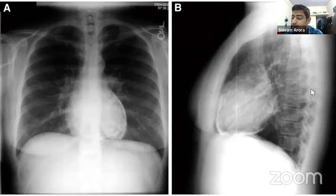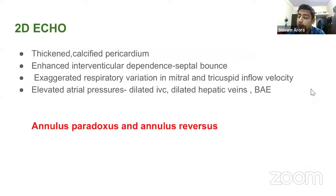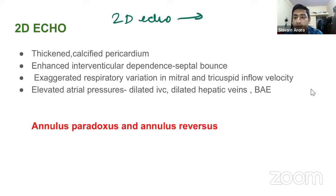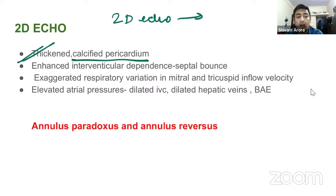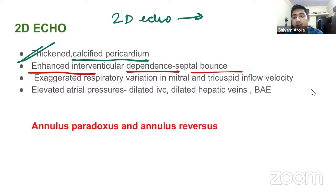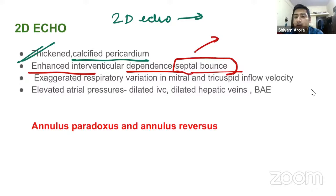The 2D echo findings are very subtle and can be easily missed. Key findings include: thickened and calcified pericardium; enhanced interventricular dependence, that is septal bounce — whenever more blood enters the right ventricle it pushes the interventricular septum to the left, and vice versa, making the septum appear bouncy. This occurs because there is no space for the ventricles to relax due to the thickened pericardium around them.